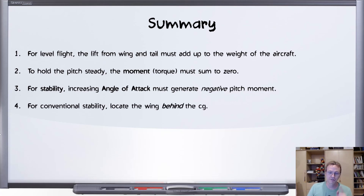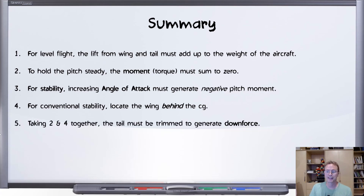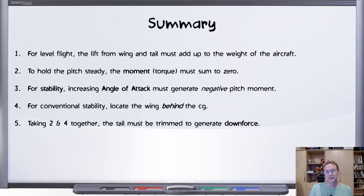For a conventional aircraft with typical stability, we will often locate the wing behind the CG. That makes the wing itself a stabilizing force, so we don't have to rely entirely on the tail being large enough. And the big reveal: combining the level-flight condition and the stability condition means your tail has to be trimmed to generate downforce when cruising in level flight. That's how you arrange the placement and size of the tail and the main wing relative to the CG to create an aircraft that is both stable and trimmable for level flight.